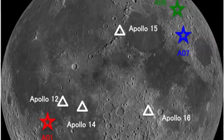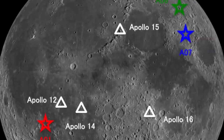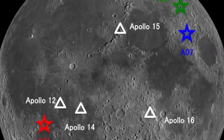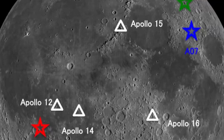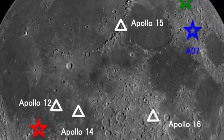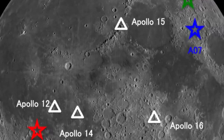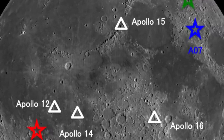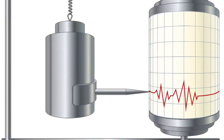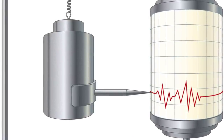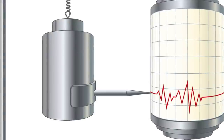The Apollo missions, which ventured to the Moon in the 1960s and 1970s, left behind a remarkable legacy. Seismometers placed on the lunar surface by the astronauts captured the rhythmic vibrations of moonquakes. These seismometers, along with more recent missions like the Lunar Reconnaissance Orbiter, have provided valuable data on moonquakes.